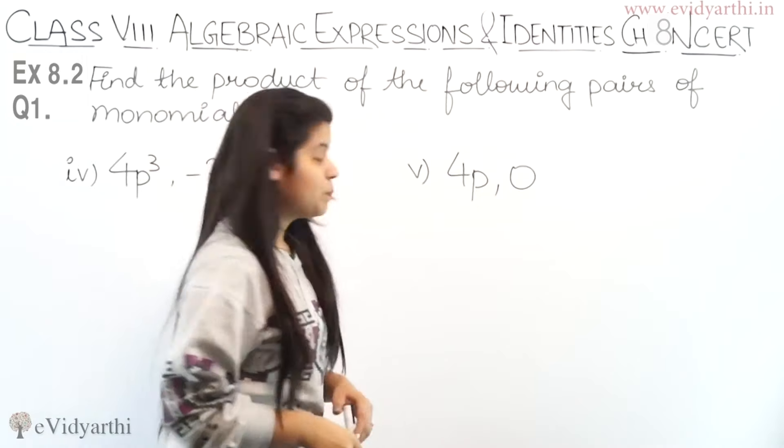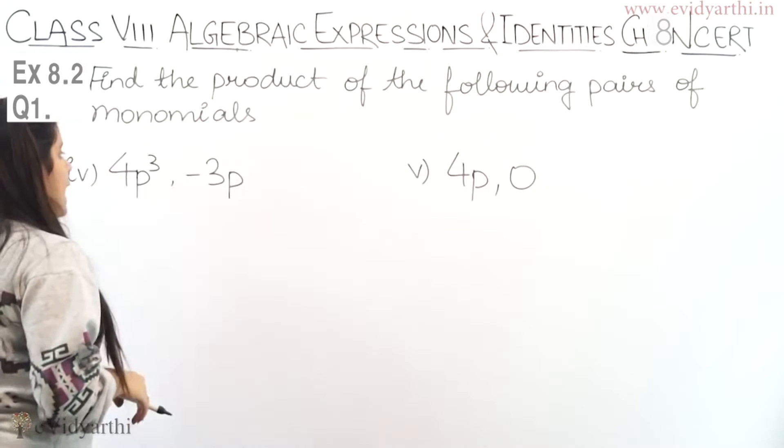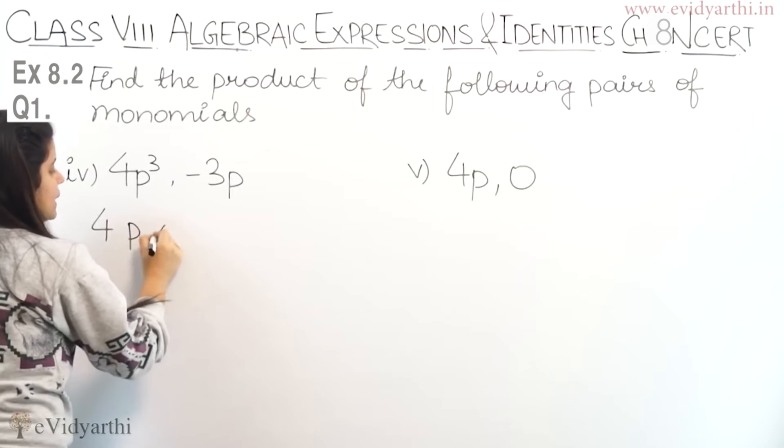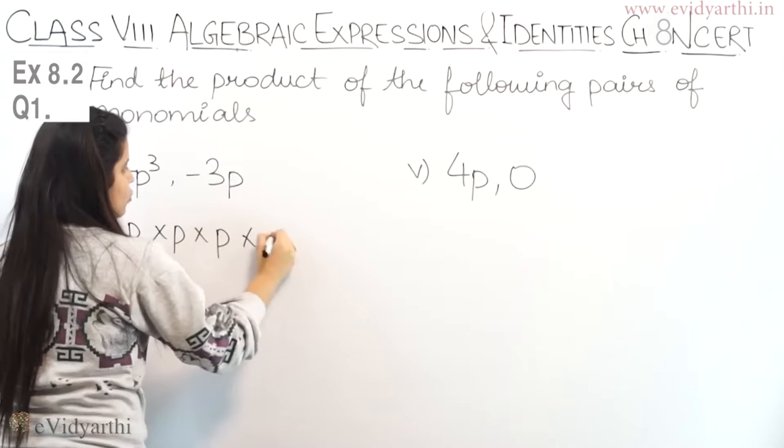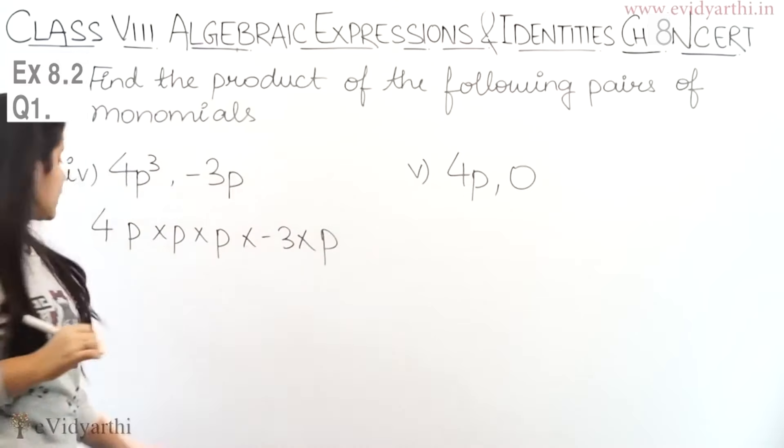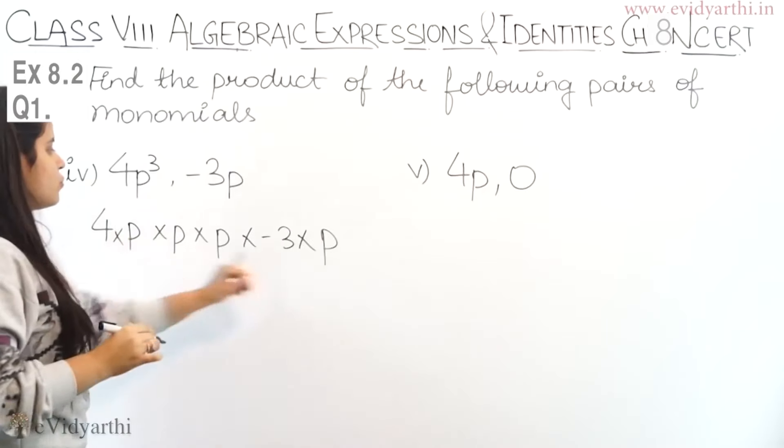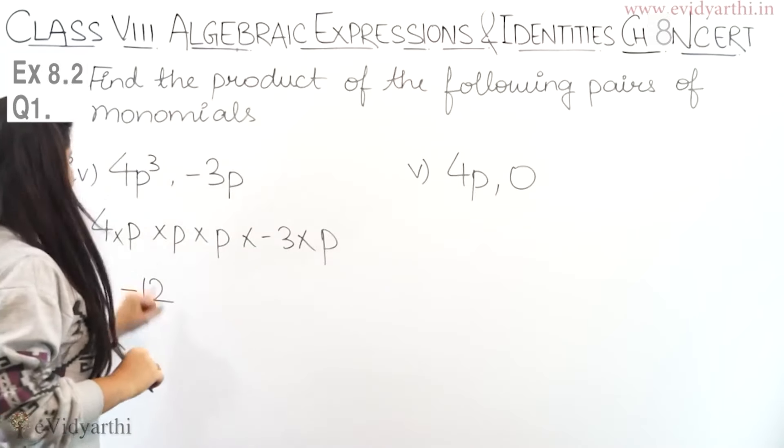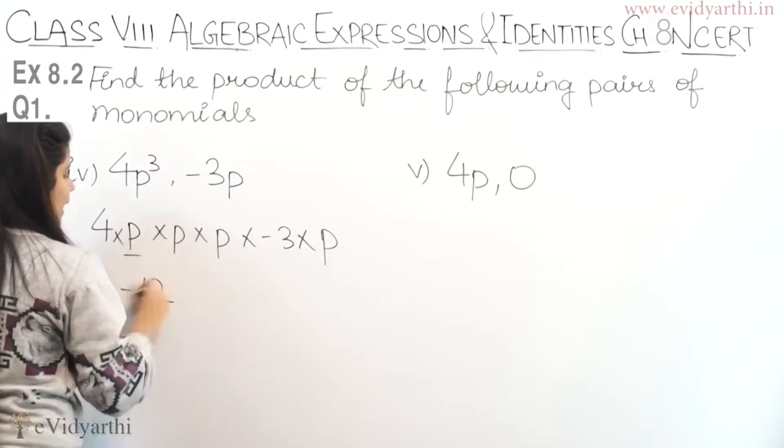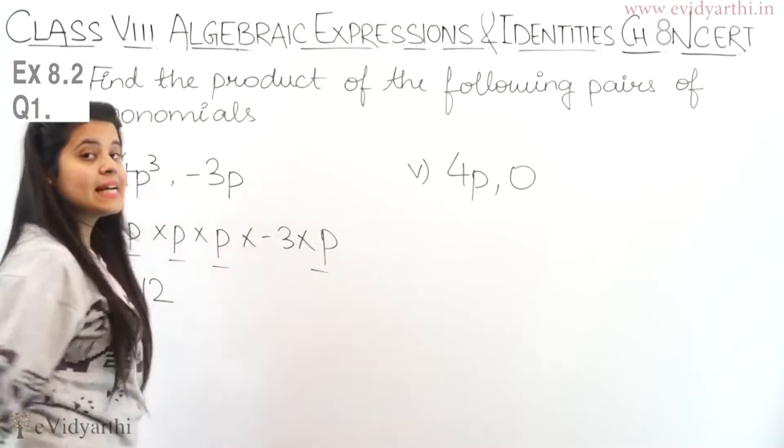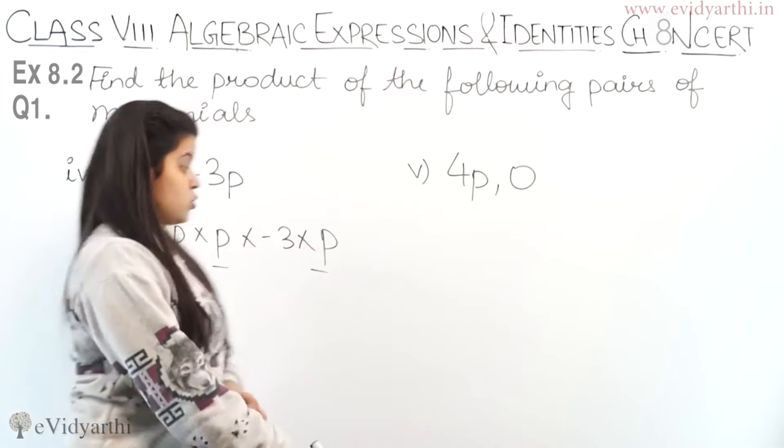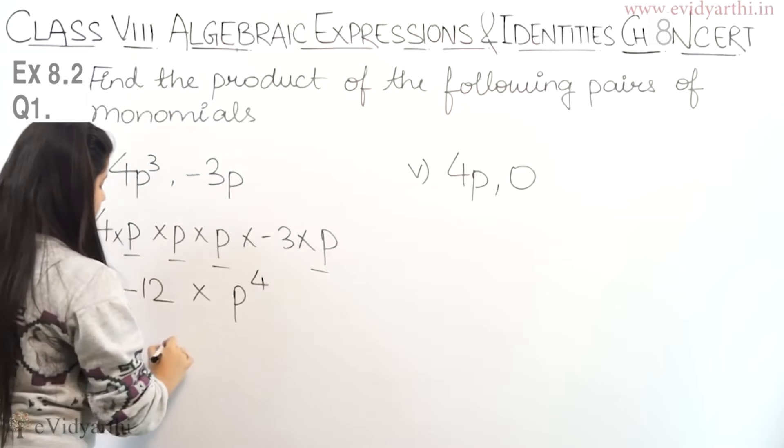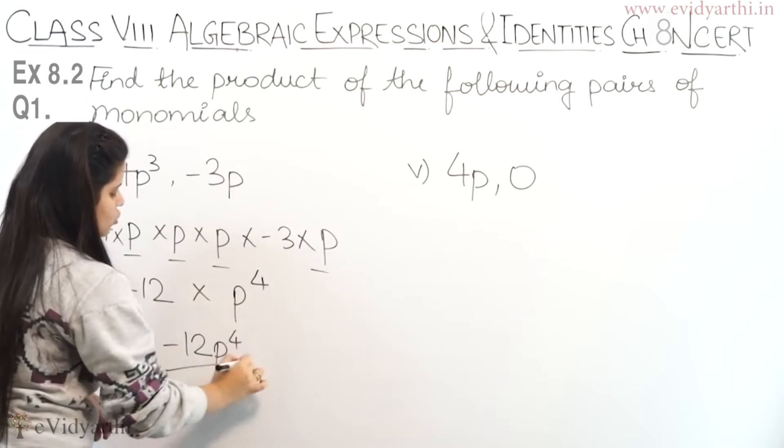Now, coming to the 4th part. In the 4th part we have 4P cube and minus 3P. So what does 4P cube mean? P into P into P, right? So we multiply 4 and 3, which is 12, with a minus sign. So this becomes minus 12. Now we have P. How many P's are there? 1, 2, 3, 4. When P appears 4 times, we write P raise to the power 4. So the answer is minus 12P raise to the power 4.